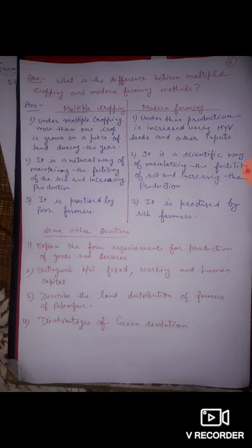Whereas modern farming is a scientific way of maintaining the fertility of soil and increasing production. The third point is that multiple cropping is practiced by poor farmers because the cost of multiple cropping is very low, whereas modern farming is practiced by rich farmers only.